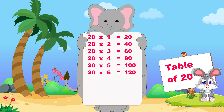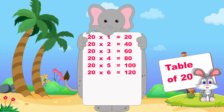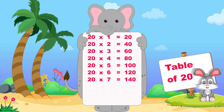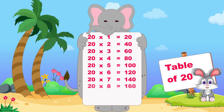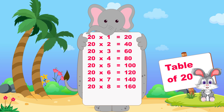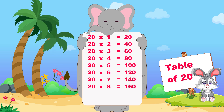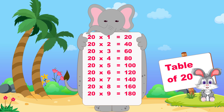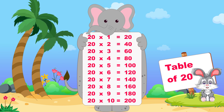Twenty sixes are one hundred twenty, twenty sevens are one hundred forty, twenty eights are one hundred sixty, twenty nines are one hundred eighty, twenty tens are two hundred.